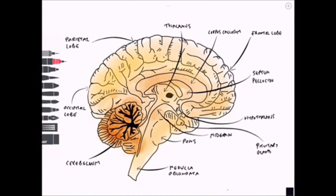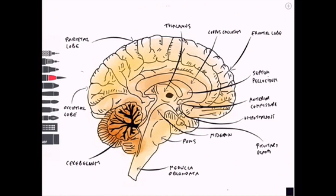Going back to the diencephalon area again, we have the septum pellucidum. This is essentially a membrane that stretches across the thalamus and is important for separating the lateral ventricles. We also have a structure associated with the corpus callosum — a bulge at the anterior surface called the anterior commissure, which is a selective area of axonal white fibres important for sharing information between the two hemispheres.